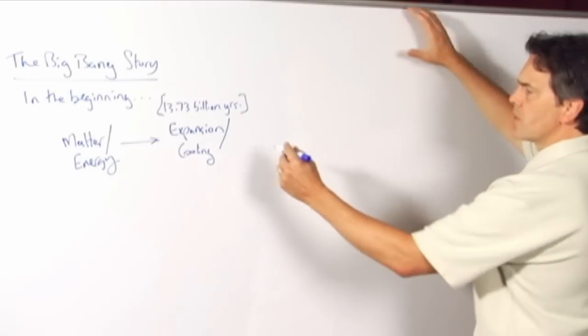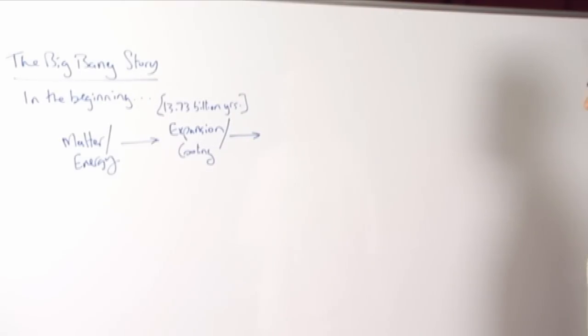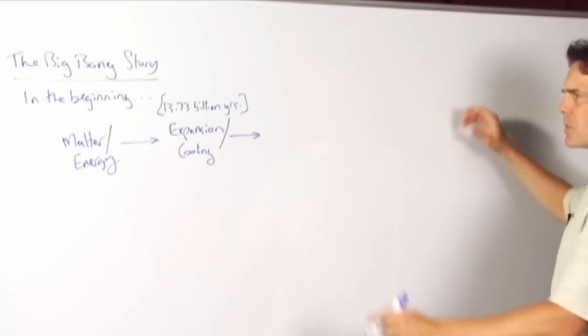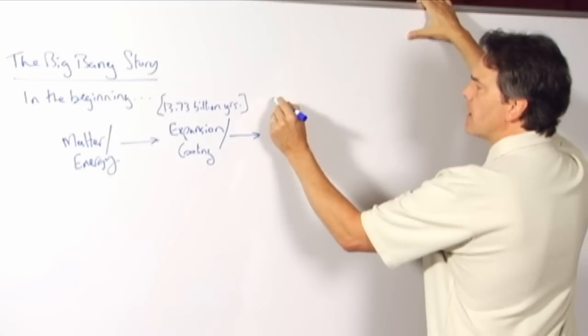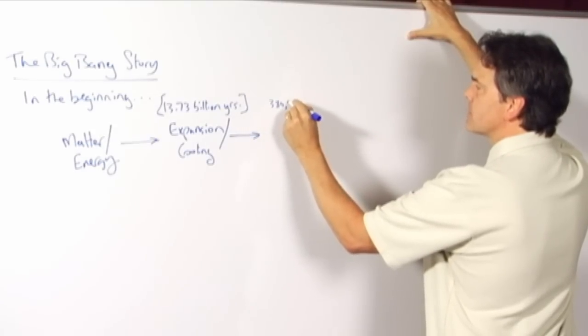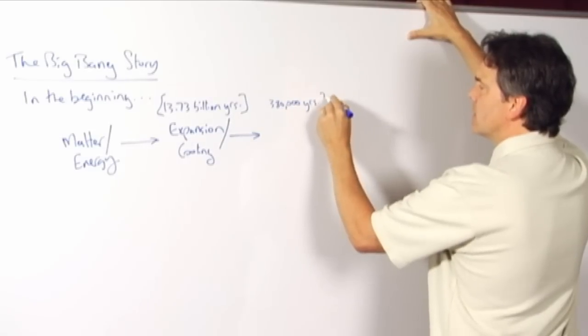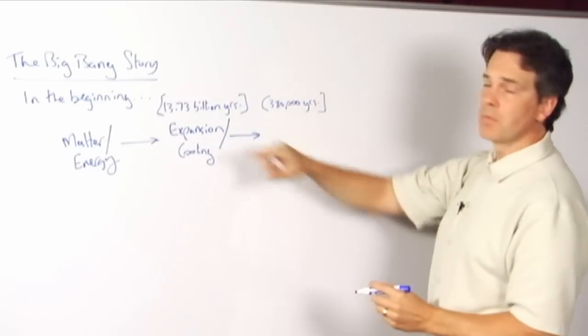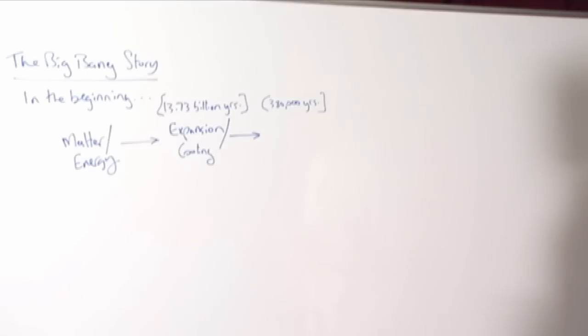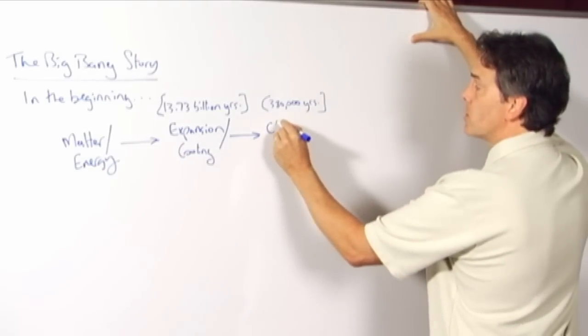All right, next thing that happens, then, is fairly quickly, blink of an eye in galactic time, so to speak, although we don't have galaxies yet, is about 380,000 years into the process. Say, a blink of an eye, when you're talking in terms of 13.73 billion years ago, we have the formation of the earliest chemical elements.